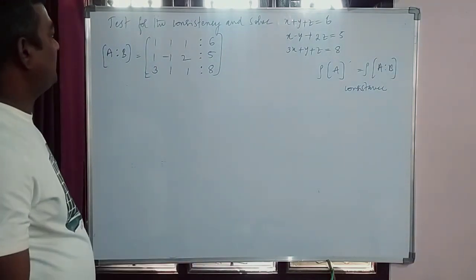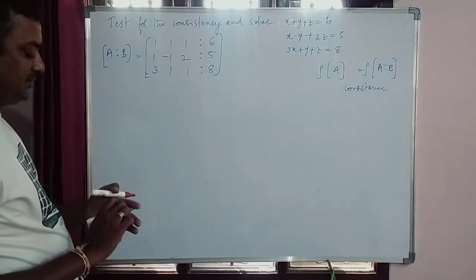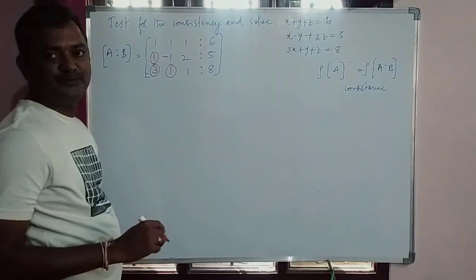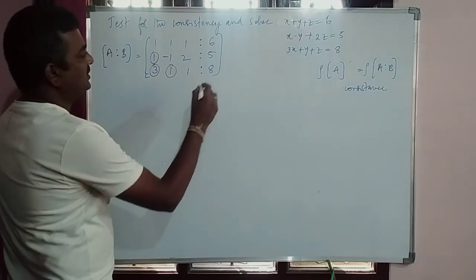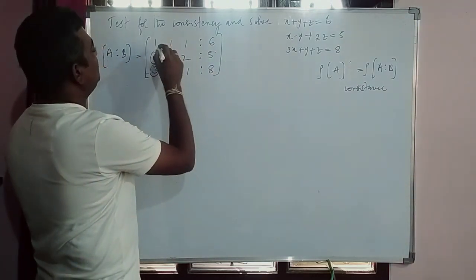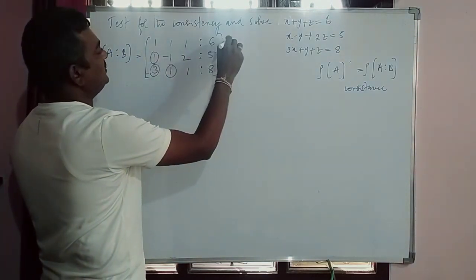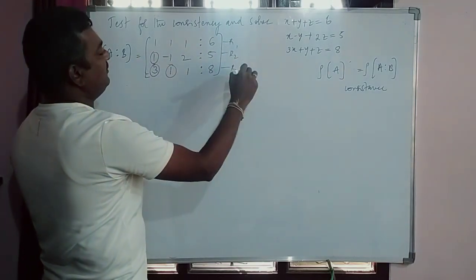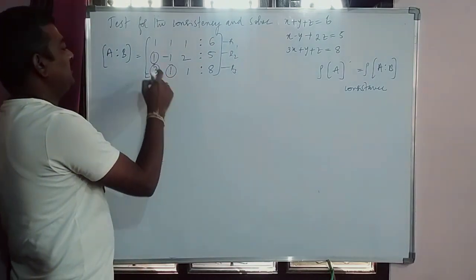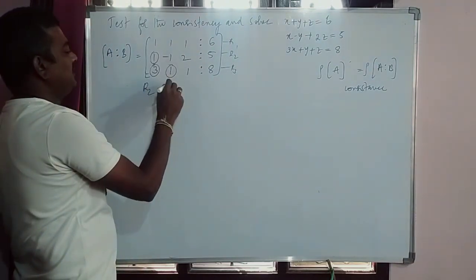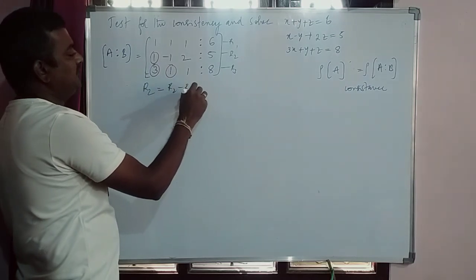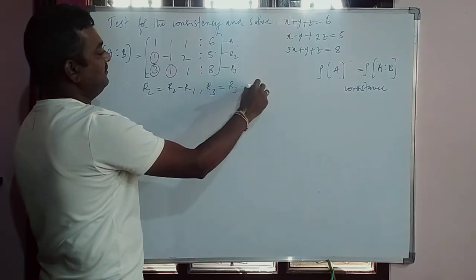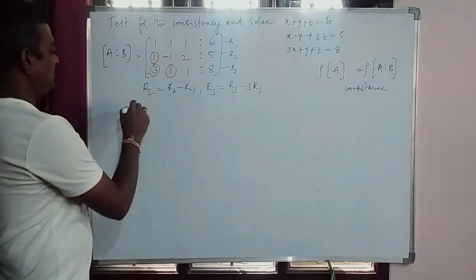Now we are applying elementary row operations. We have to make these elements zero. So this is R1, this is R2, this is R3. I am applying for R2, R2 equal to R2 minus R1. Similarly R3 is R3 minus 3 times R1.